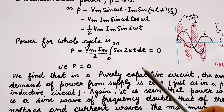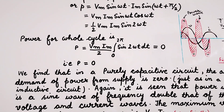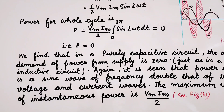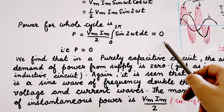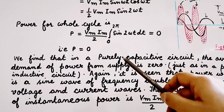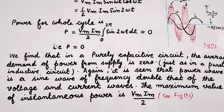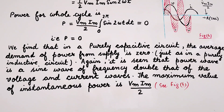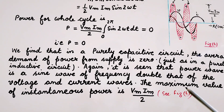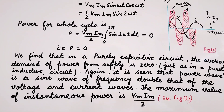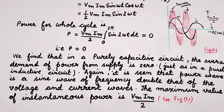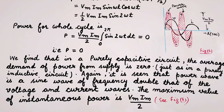To find the power for the whole cycle, we integrate from 0 to 2π, and this comes out to be 0. That is, the average power or true power for one complete cycle is equal to 0. So in a purely capacitive circuit, the average demand of power from the supply is 0, just as in a purely inductive circuit. The power wave is also a sine wave having double the frequency of the voltage and current wave, with maximum instantaneous power VmIm/2, as shown in figure B.